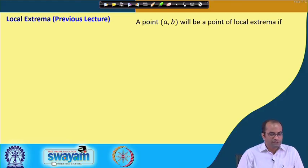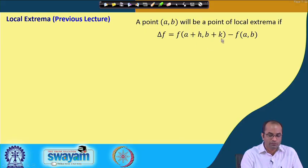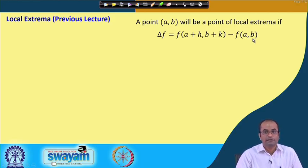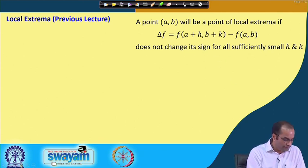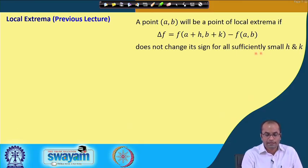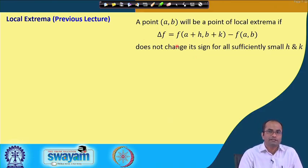In the previous lecture we saw that a point (a, b) will be a point of local extrema if delta f — the difference between the function value at neighborhood points of (a, b) and the function value at (a, b) — does not change its sign for sufficiently small h and k. If it does not change sign, we have a local maxima or minima, but if it changes its sign, the point is a saddle point.